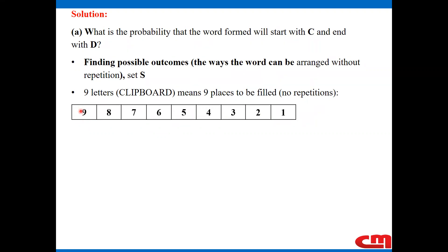Once position one is filled, I'm left with eight letters. Then in position two, I have to choose from the eight letters. Once it's filled, I'm left with seven. Position three, I choose from the seven remaining letters, and so on and so forth up to the last position, which is position nine, where I'll be having only one letter to place. The numbers nine, eight, seven, six down to one represent the choices at each different position.